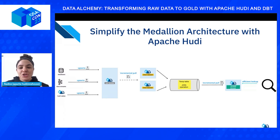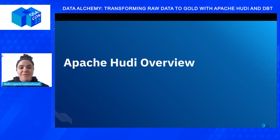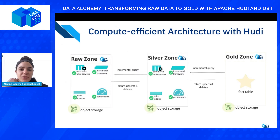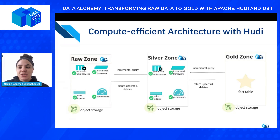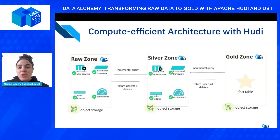Now that I'm introducing Apache Hudi, let's get an overview of what it is and what it provides. Previously we looked at the bottlenecks of the medallion architecture, but what if you had these features and services enabled? Apache Hudi is a data lakehouse platform that provides database-like quality features and services to your data storage like S3. With Hudi, you can fully automate table services that continuously schedule and orchestrate clustering, compaction, cleaning, file sizing, and indexing to always ensure your tables are ready and healthy.